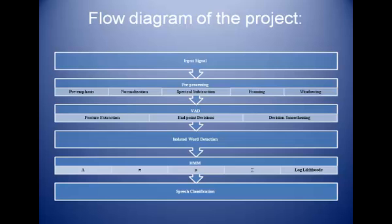This project is divided into three stages. The first stage deals with the preprocessing of the input signal, which includes high-pass filtering, normalization, and spectral subtraction. Spectral subtraction is a robust preprocessing step. The second stage consists of the VAD algorithm, which is developed using feature extraction. VAD is used here for detecting the start and end point of the input speech.